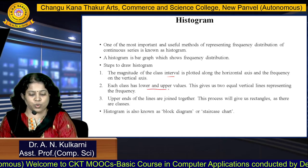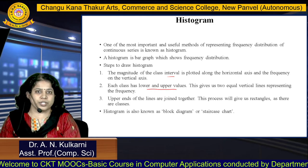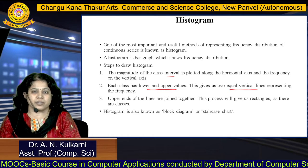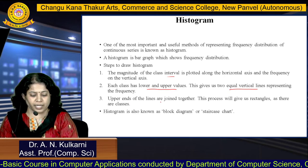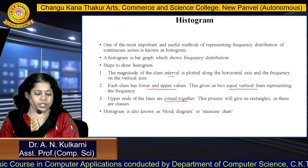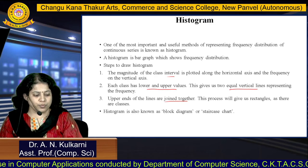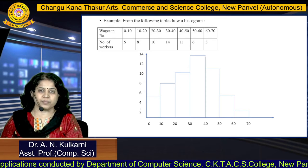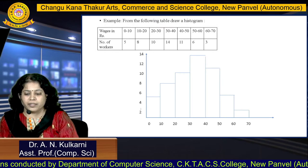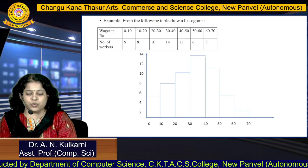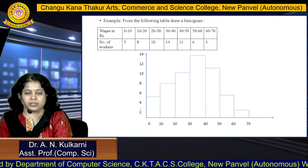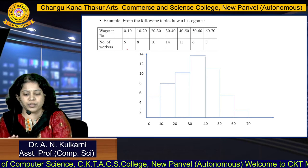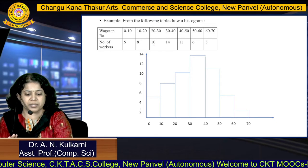Each class has a lower and upper value, giving two equal vertical lines corresponding to the frequency. The upper ends of these lines are joined together so that a rectangle is formed. Here, wages are given in rupees; the class intervals are 0 to 10, 10 to 20, and so on; and the number of workers is given — that is the frequency.